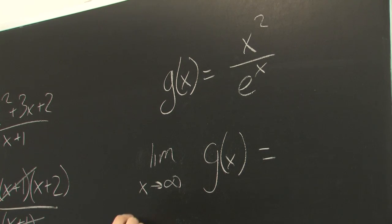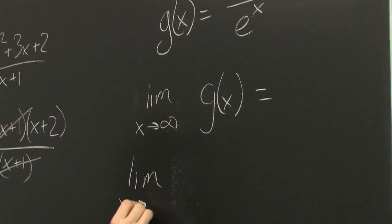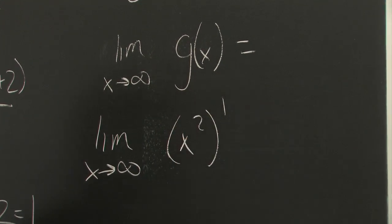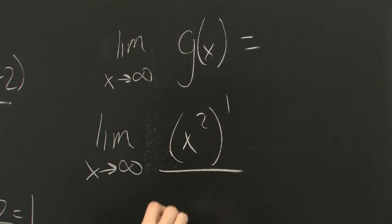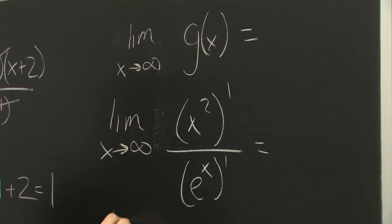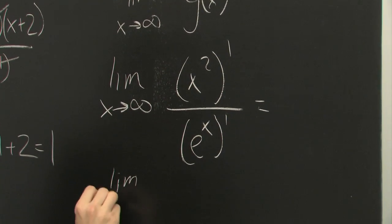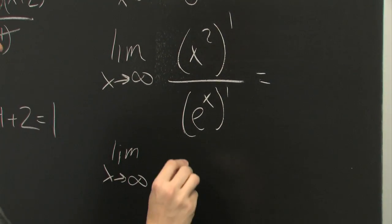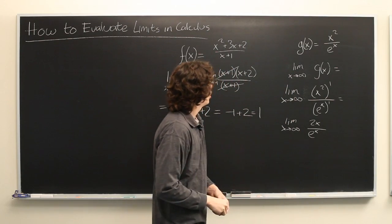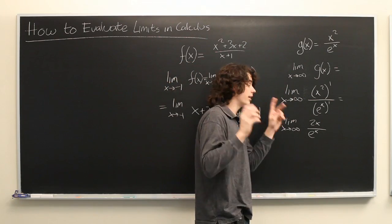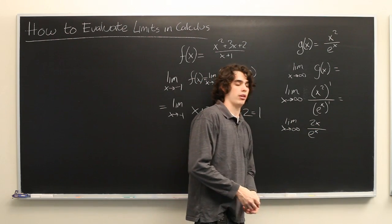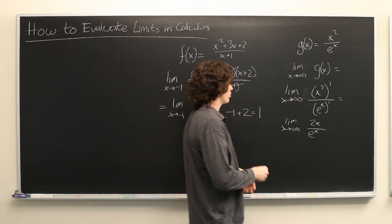So this is equivalent to the limit as x goes to positive infinity of the derivative of the top over the derivative of the bottom. We will rewrite that: x goes to infinity, 2x over e to the x. Well here we have the same problem. If you plug in x equals infinity you get positive infinity on the top and positive infinity on the bottom. Well we can simply apply L'Hopital's rule again.